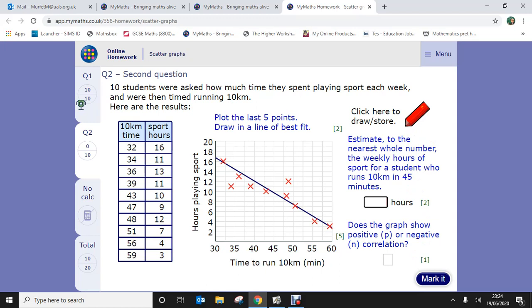Okay, estimate to the nearest whole number the weekly hours of sport for a student who runs 10 kilometers in 45 minutes. So time to run 45 minutes - hours playing sport. Coming up here, 45 minutes, so roughly is going to be 10 hours to the nearest whole number.